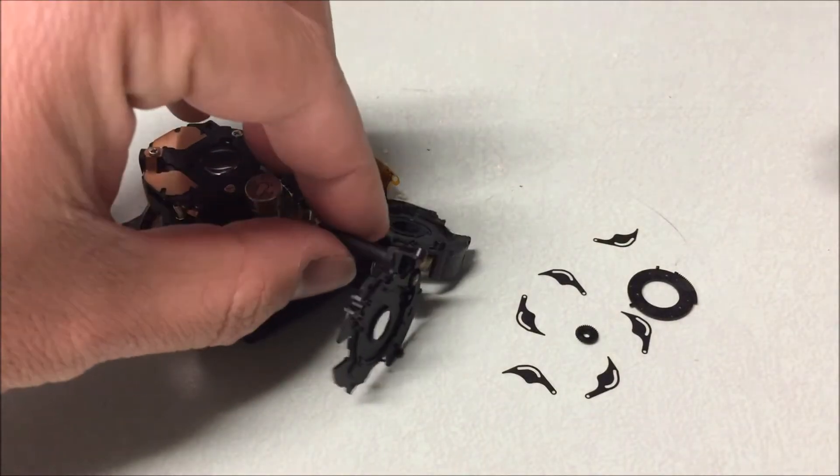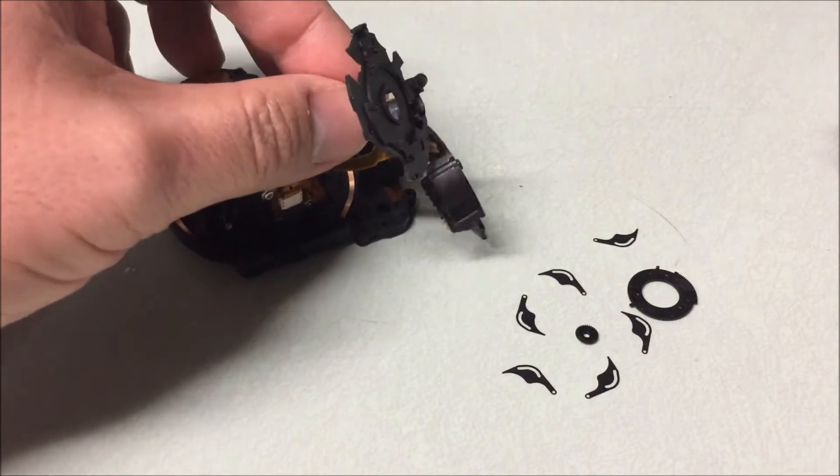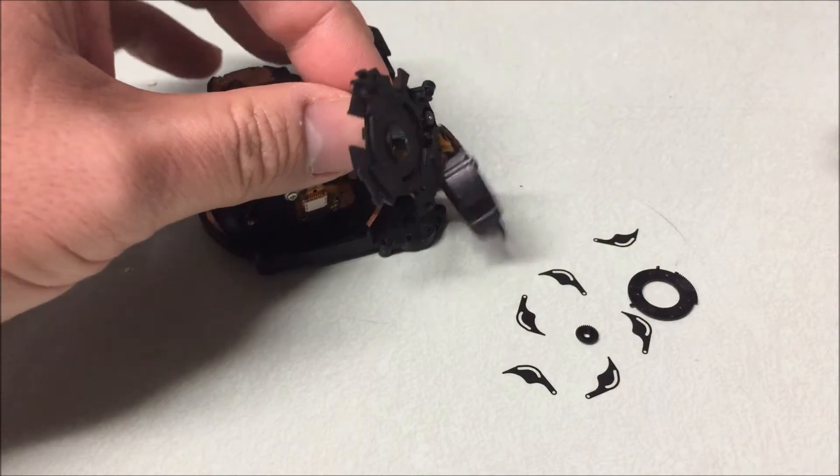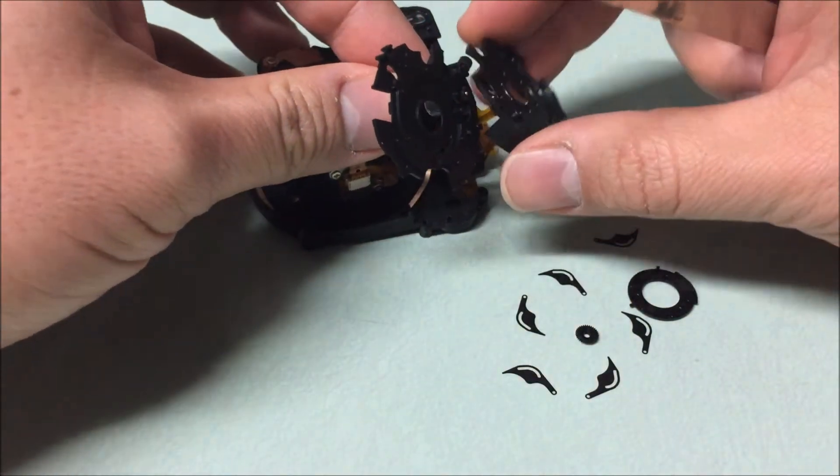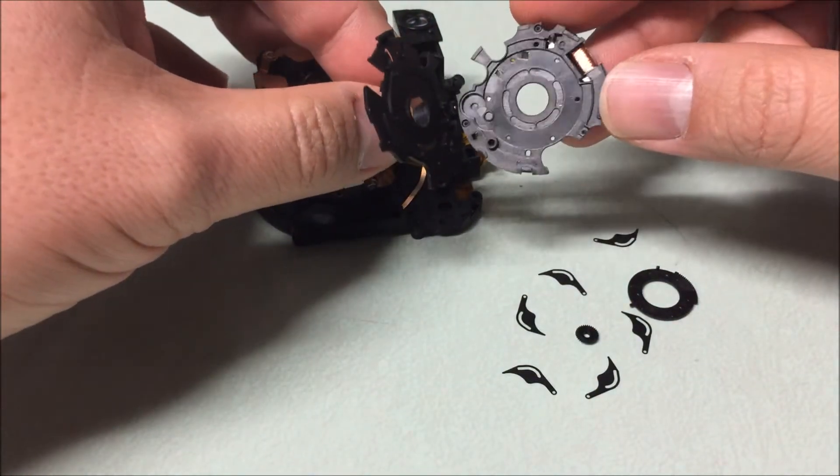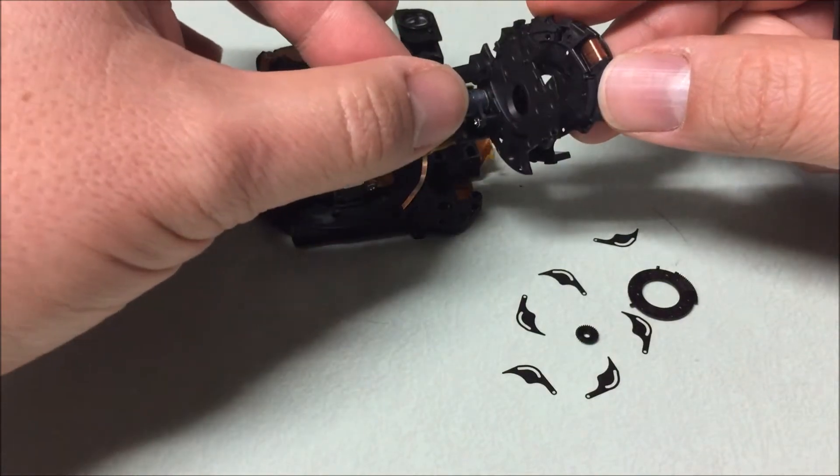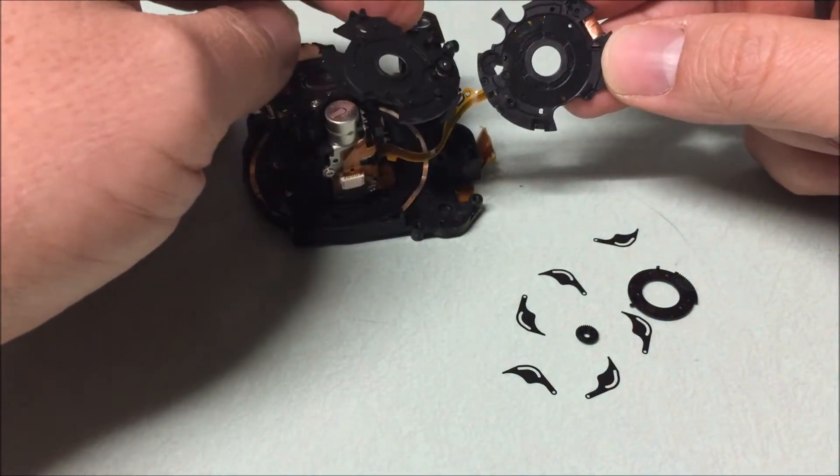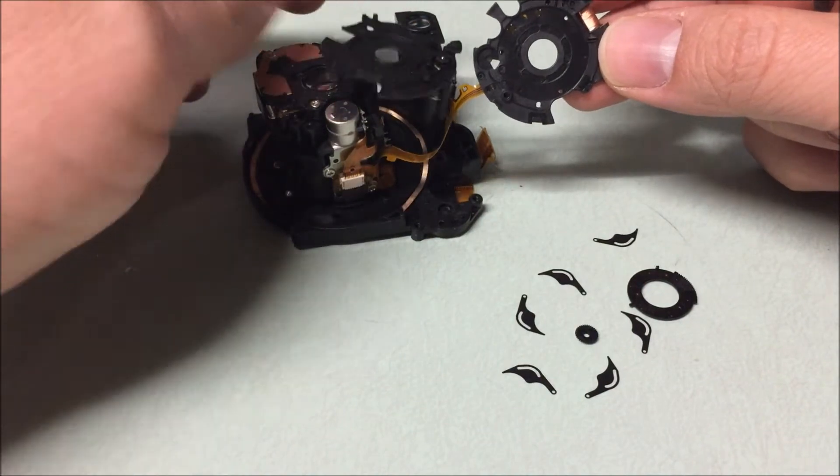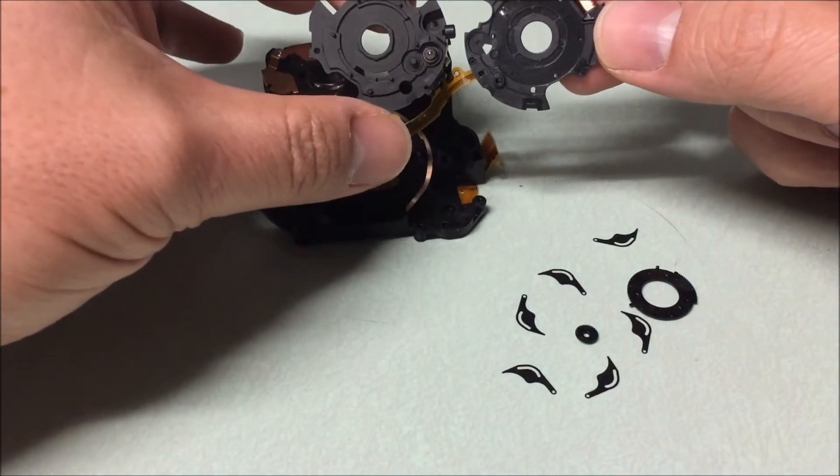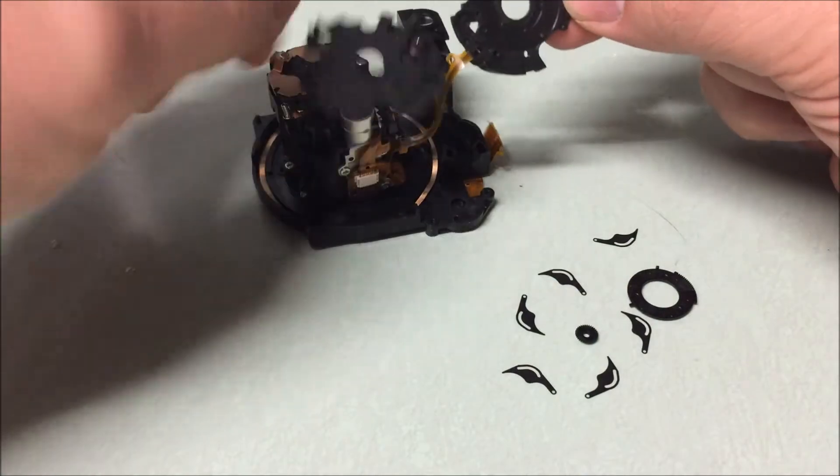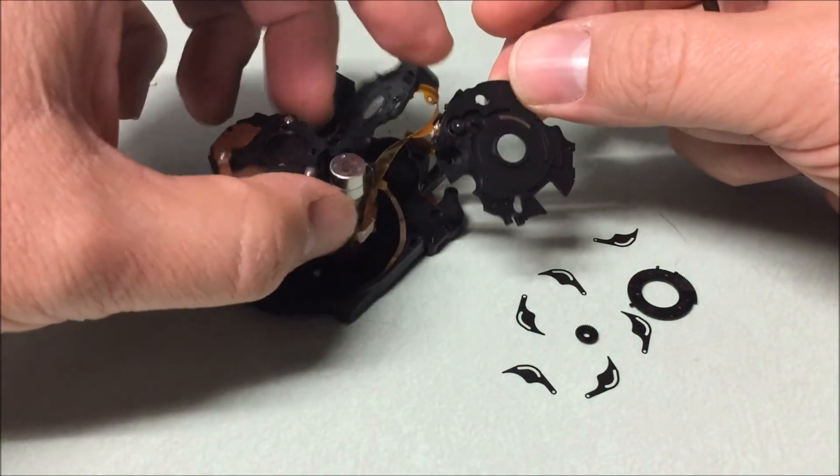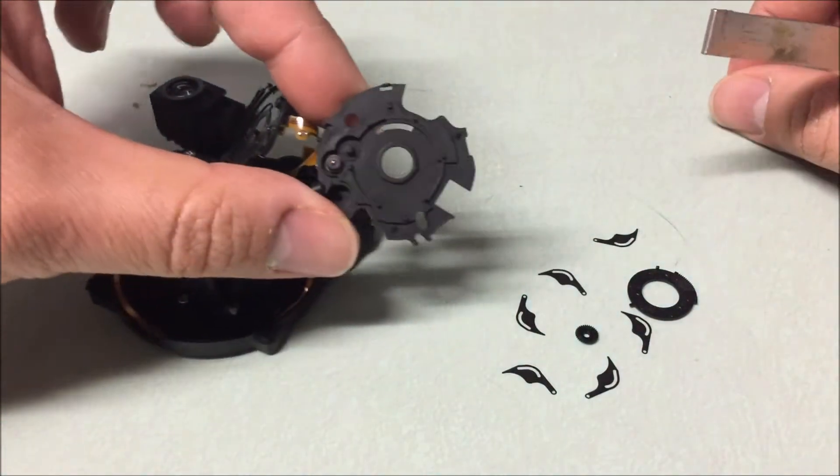Chances are you're watching this video because you have a mess of parts very similar to this. You're trying to clean your shutter blades and suddenly your aperture comes open and all your little aperture blades fall out. It may seem like the end of the world, but it's really not—but you're not in for an easy ride either.